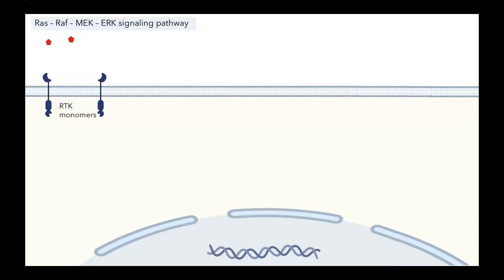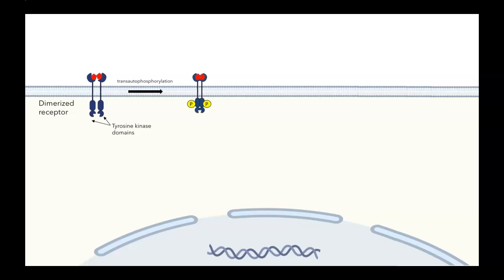When we add the signal, it will bind to the monomers, and that leads to receptor dimerization. Now the two monomers have a high affinity for one another. The cytoplasmic domain has tyrosine kinase activity, and when they're brought close like this, what happens is a process called trans-autophosphorylation, which is basically a fancy way of saying that the individual monomers reach across and phosphorylate tyrosine residues on their partner. So we end up with a fully activated receptor.